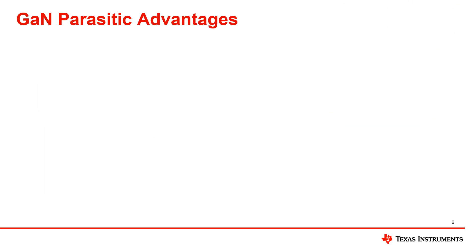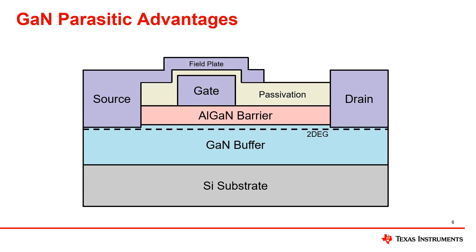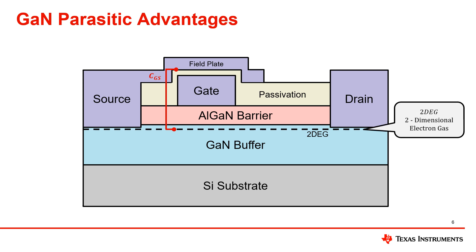Now let's look at the key advantages coming from the parasitic capacitance of GAN FETs. Before that, we will identify where these capacitances are located in a GAN FET structure. The lateral structure of an enhancement GAN FET makes it a very low capacitance device. In this lateral structure, the gate-to-source capacitance is the capacitance of the device from the 2DEG channel to the field plate on top of the gate terminal. It consists of the junction from the gate in the channel and the capacitance of the dielectric between the gate and the field plate.